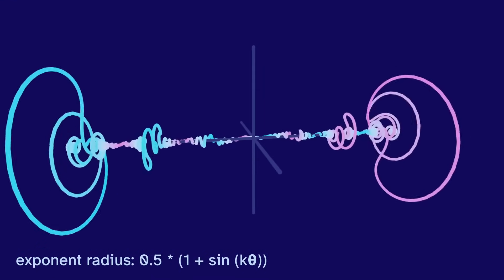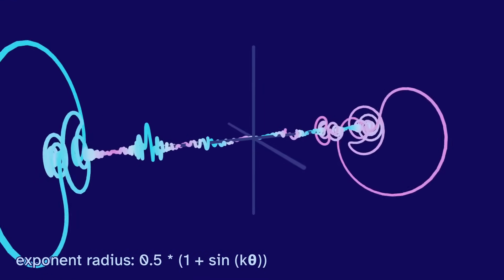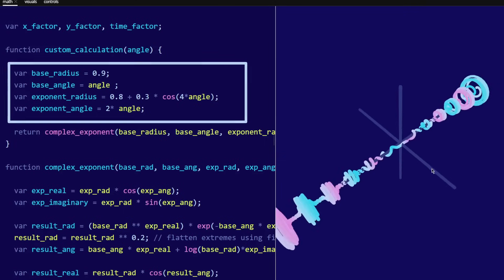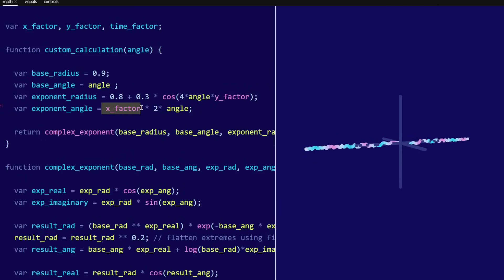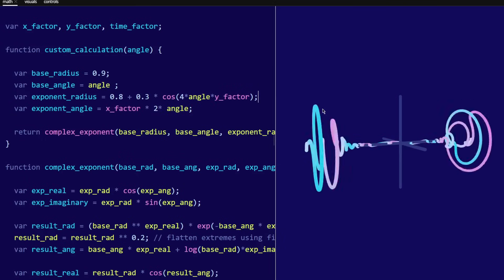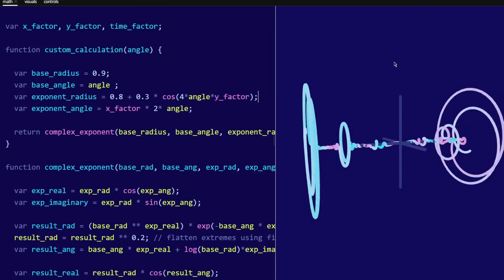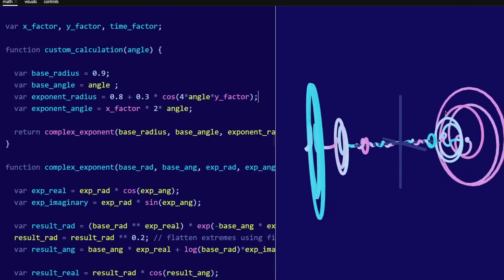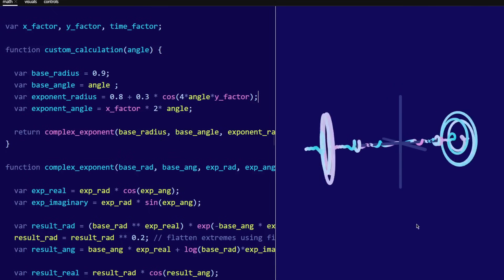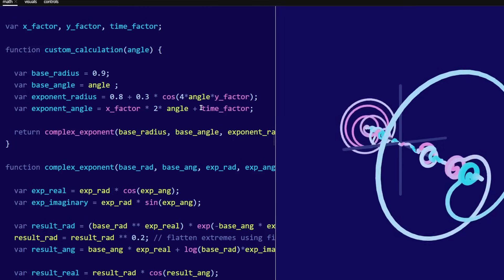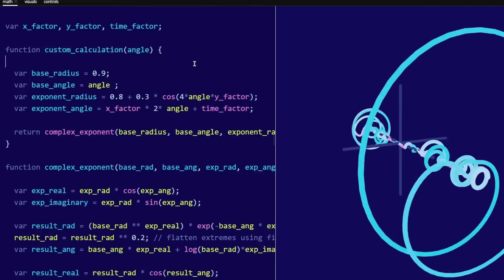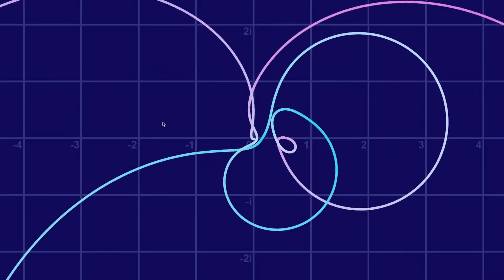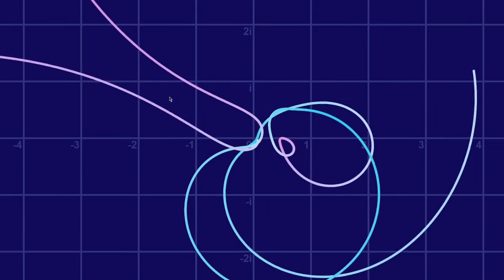And you can play around with this yourself. This sketch is linked in the description. These four lines of code determine the functions for the radius and angle of the base and exponent. There's an x and y factor based on the mouse position, which makes this really fun. You can interact in real time to see how changing those inputs changes the graph. And there's also a time factor, so things can move by themselves. I've also made a two-dimensional version, since there's a lot of fun to be had here as well.